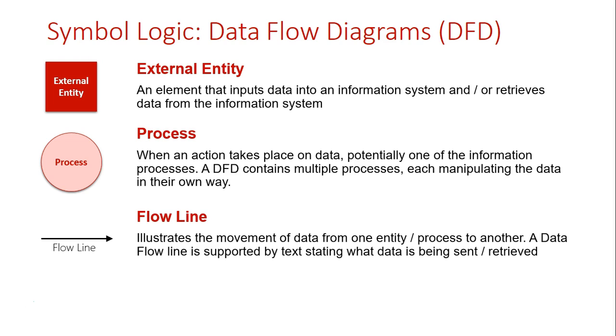The third symbol is the flowline. As with Context Diagrams, the flowline is showing the movement of data within the system. Except in this case, after the data enters a specific process, we're hoping that the data is transformed after that process, and that will be reflected in the flowlines and the movement of data between processes.